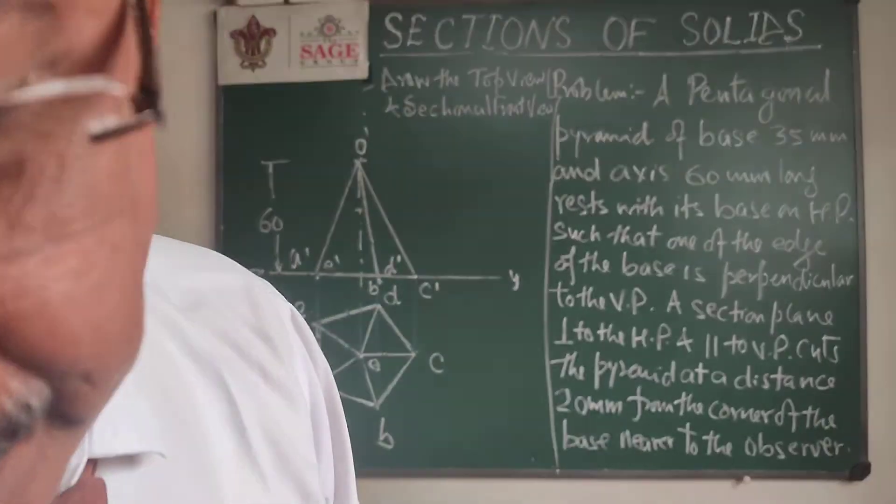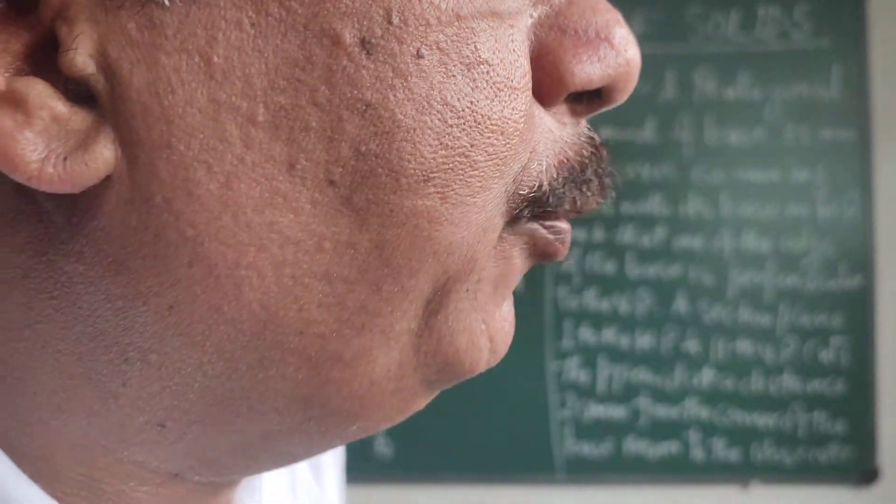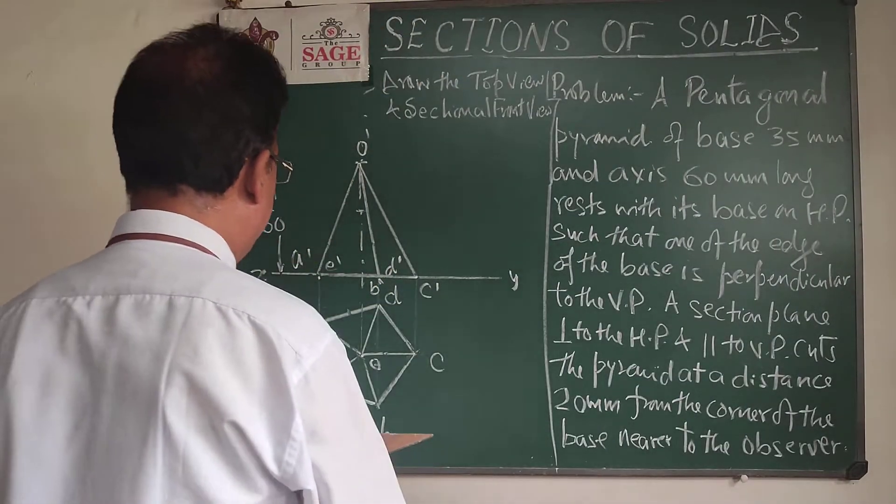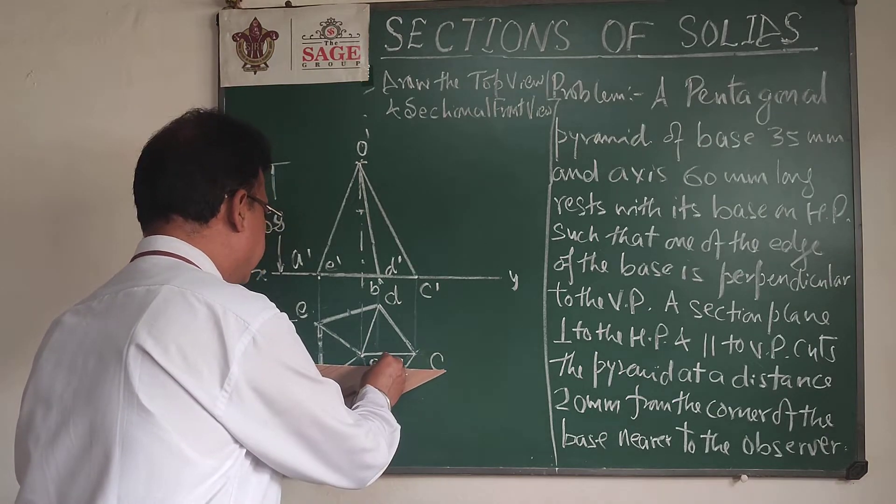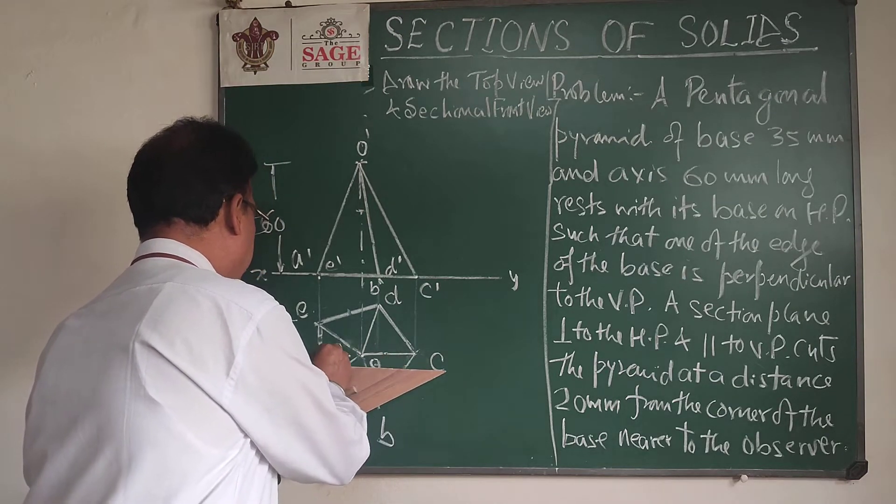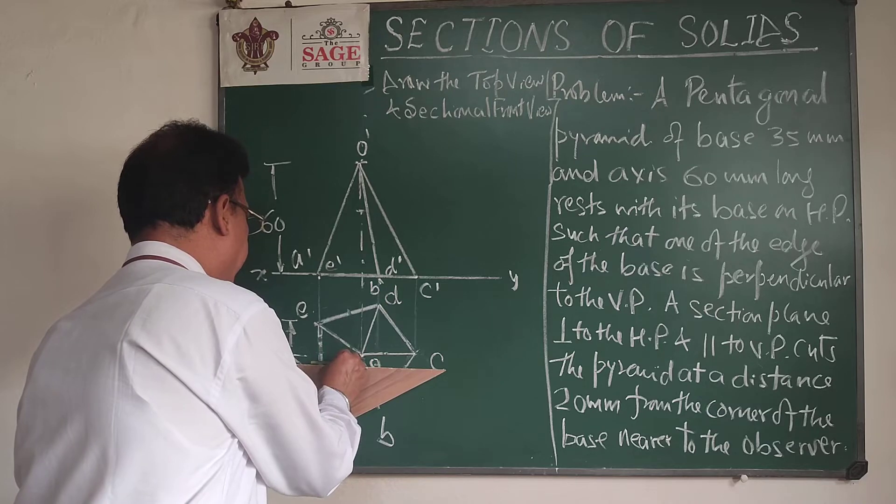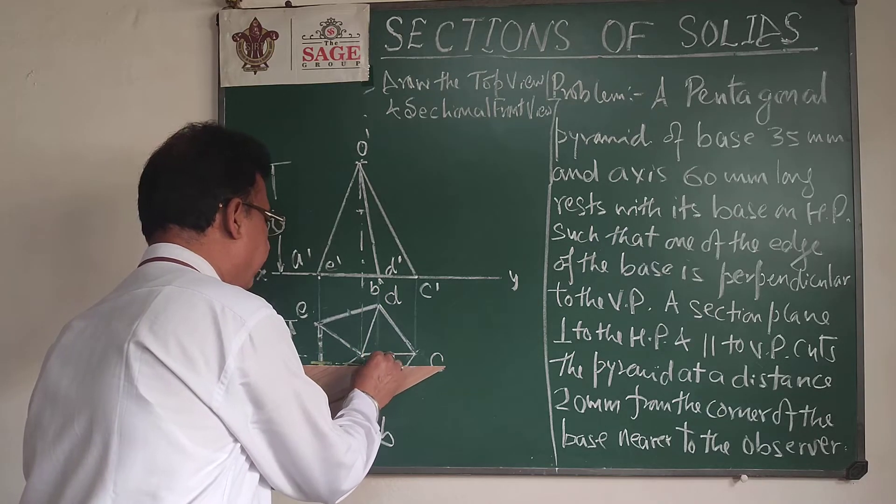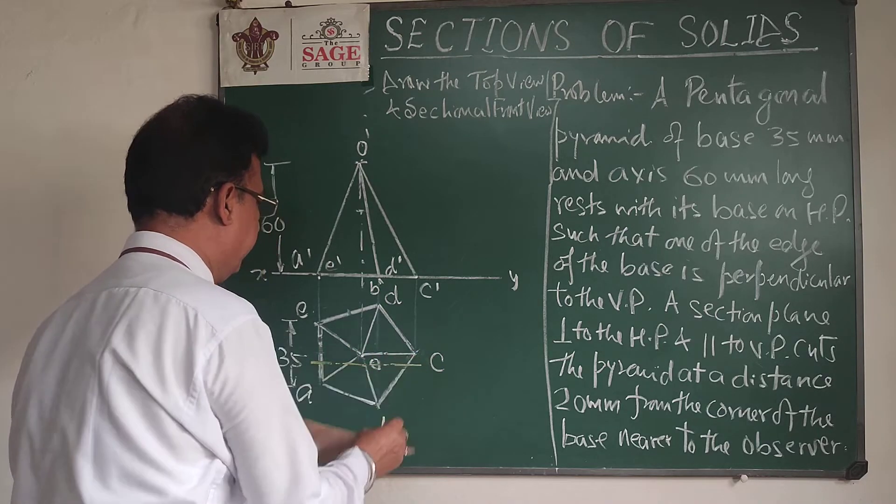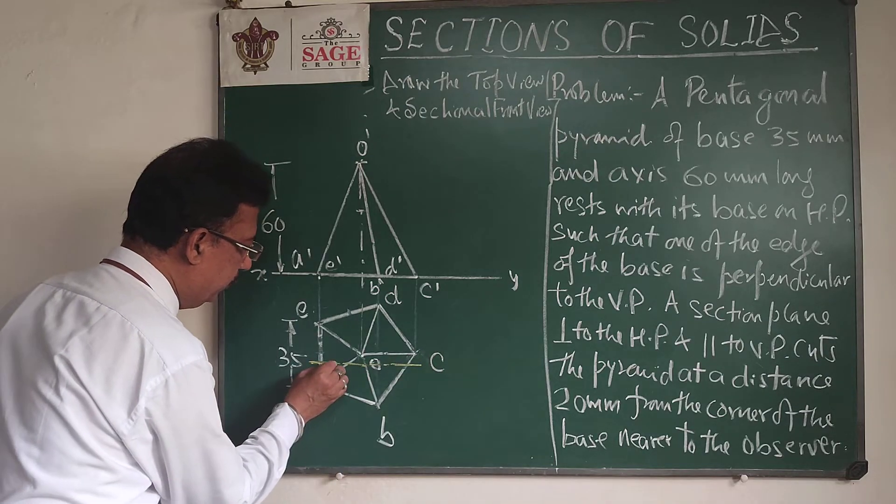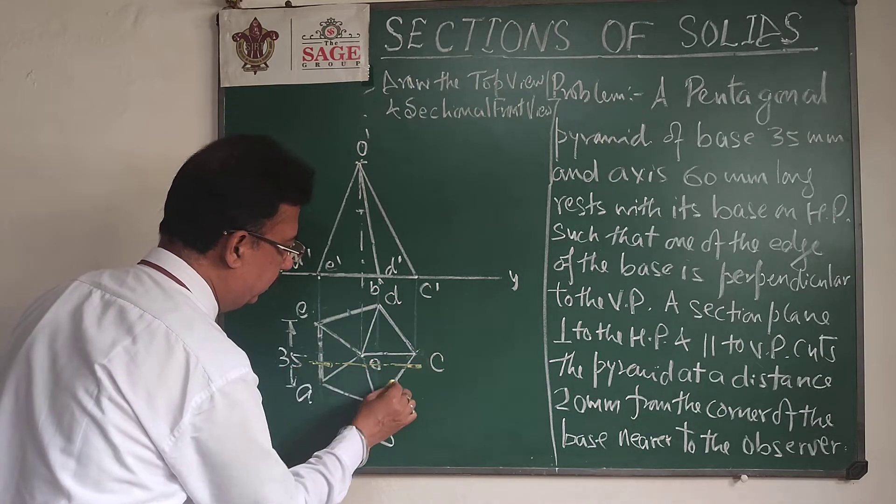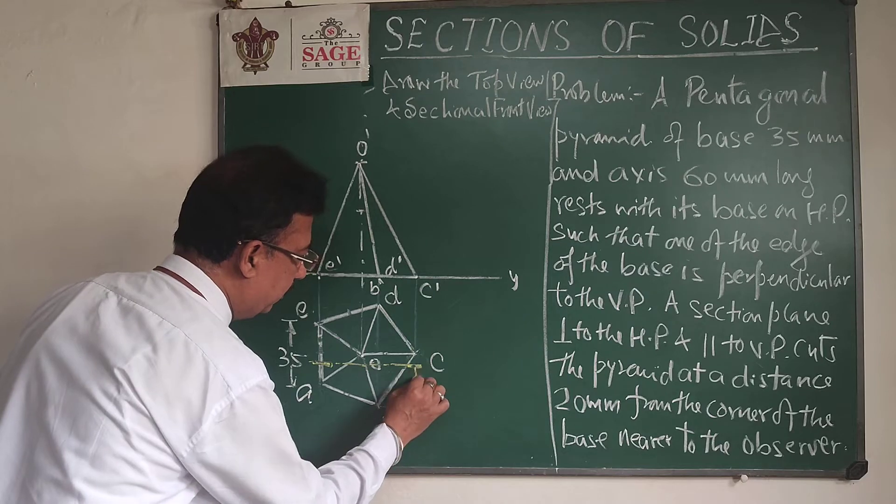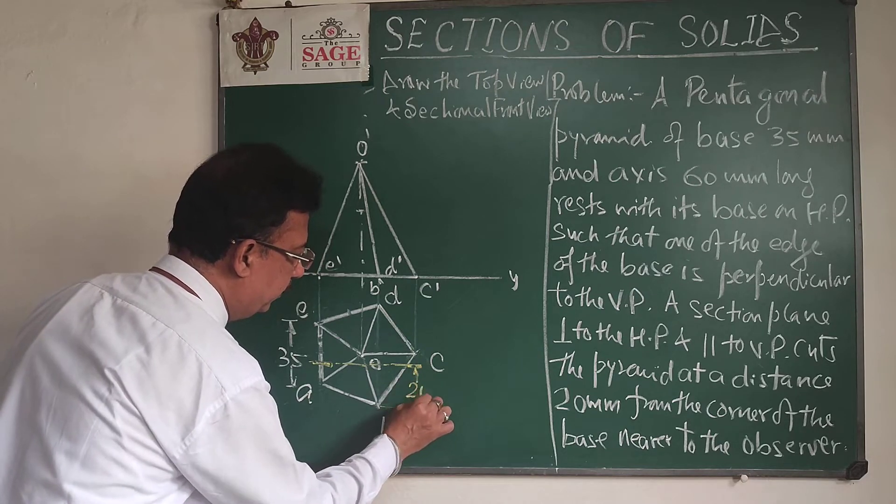So from this point B, we have to go upside 20 mm and cut this by a section plane which is parallel to VP. As you know that whenever section plane is parallel to VP its top view will be a line and that is parallel to XY. So this will be our required section plane and this distance will be 20.